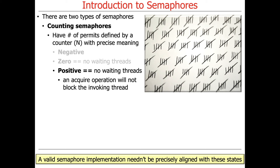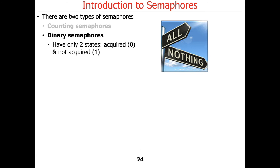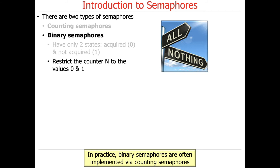The implementation of the semaphore may not precisely align with these three states — negative, positive, and zero — it may implement it slightly differently, but the effect is the same. Binary semaphores are much simpler: an all-or-nothing proposition with only two states, acquired and not acquired. Acquired means the value is zero; not acquired means the value is one, so it's available or free. In practice, binary semaphores are often implemented by counting semaphores restricted to values zero or one. Some languages define binary semaphores separately from counting semaphores, but Java does not — it uses a single Semaphore class that can be used as either binary or counting.